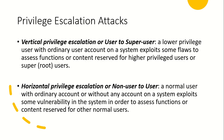There are privilege escalation attacks, which can be of two kinds: vertical privilege escalation and horizontal privilege escalation. In vertical escalation, a general user or guest user can illegally gain access to an admin, higher-level user, super user, or root user. In horizontal privilege escalation, one user tries to gain access to another user's data, where both may have the same user-level privileges.